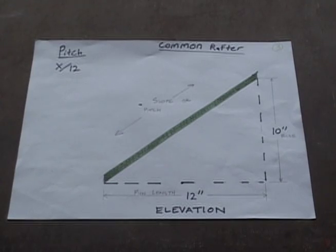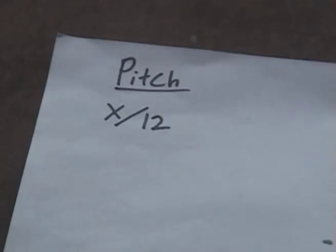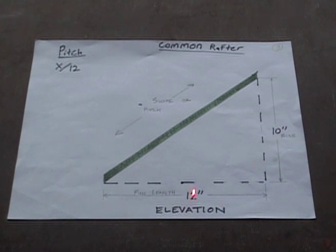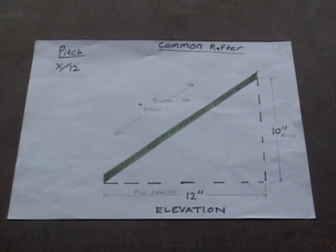Now let's review some facts from episode 1. Remember that the pitch of a common rafter is always expressed as some number over 12. This ratio refers to the ratio of rise over run. In this particular common rafter, we have a rise or height of 10 inches to a run length of 12 inches, and the pitch of this rafter is 10 over 12. So for every 12 inches of run length, the rafter rises 10 inches in height.